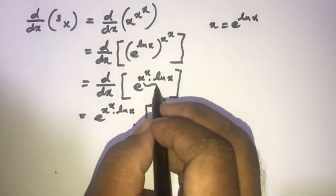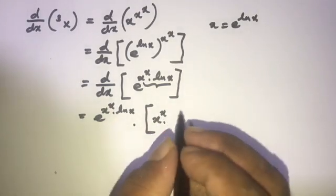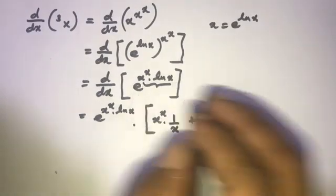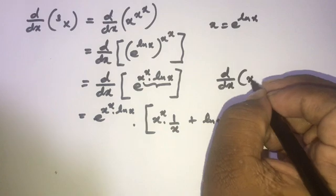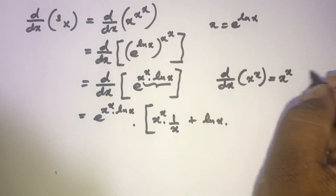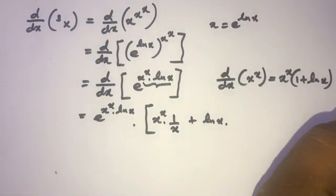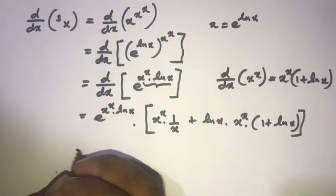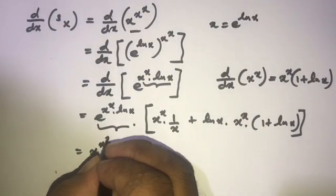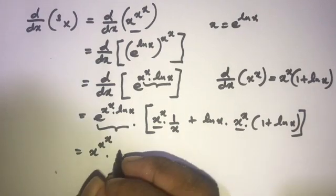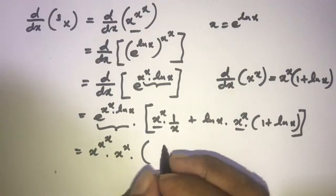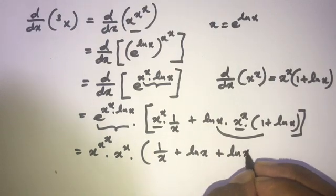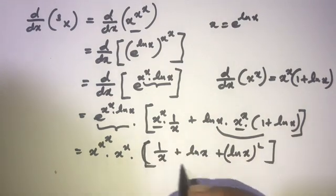Differentiating, we get e to the x to the x times ln x, times the derivative of x to the x times ln x using the product rule: rewrite the first function times the derivative of the second, plus the second times the derivative of the first. We know from question one that the derivative of x to the x is x to the x times (1 plus ln x). This gives x to the x times (1 plus ln x), and x to the x is a common factor, giving x to the x times 1 over x plus ln x plus ln x squared.